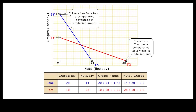So in this two-goods economy, Jane has a comparative advantage in producing grapes because of her lower relative cost of producing grapes in terms of nuts foregone. And Tom has a comparative advantage in producing nuts because of his lower relative cost of producing nuts in terms of grapes foregone. The different relative slopes of the two production functions therefore graphically illustrate the different relative costs of producing grapes and nuts between the two workers.